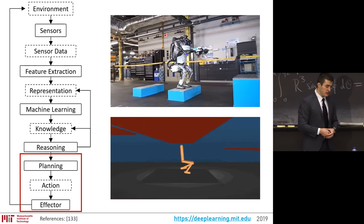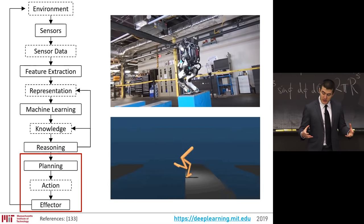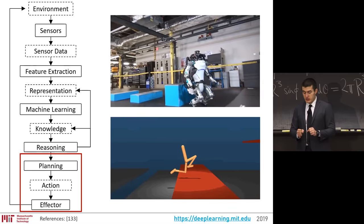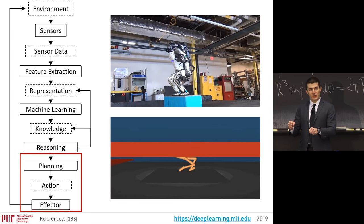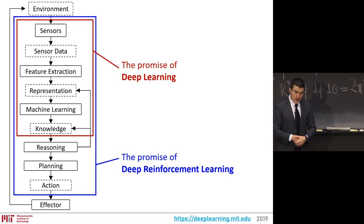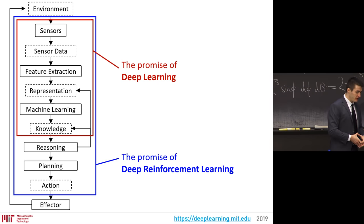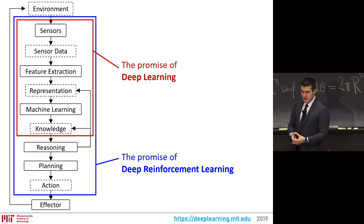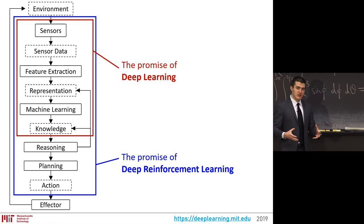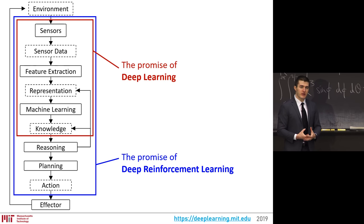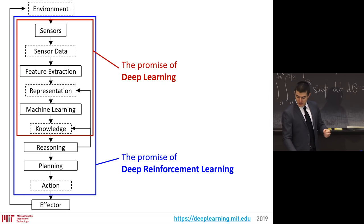Once you sense the raw world and have a representation of it, we need to act — providing actions within the constraints of the world in such a way that we believe can get us toward success. The promise and excitement of deep learning is the part of the stack that converts raw data into meaningful representations. The promise and dream of deep reinforcement learning is going beyond — building an agent that uses that representation and acts, achieving success in the world.